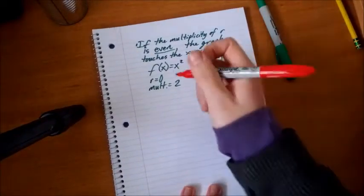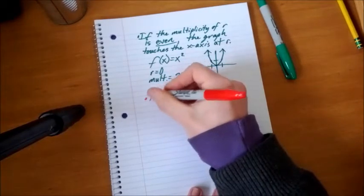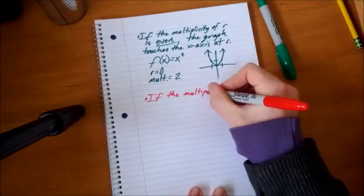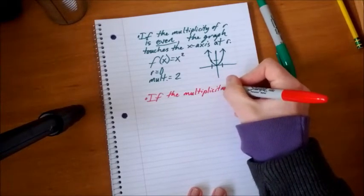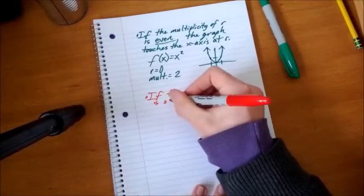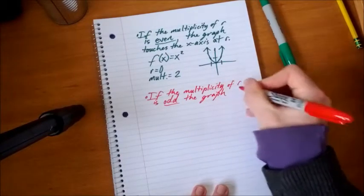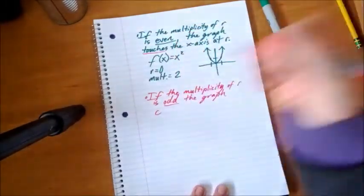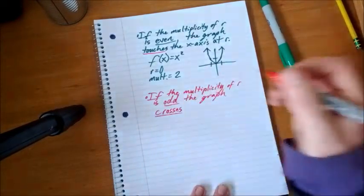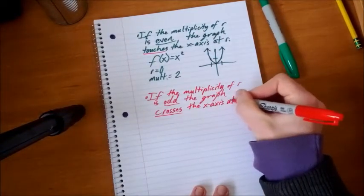Let's do the odd in red. Mixing things up. If the multiplicity of r, the real zero, is odd, the graph crosses the x-axis at r, the real zero.